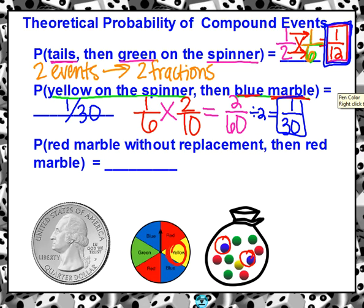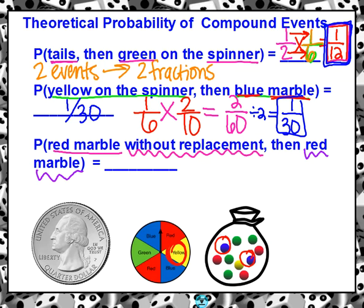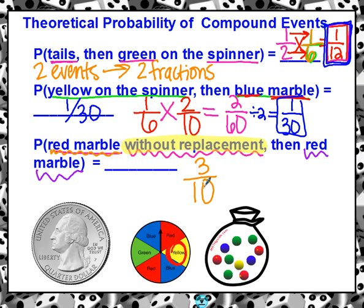The last one says the probability of a red marble without replacement, then a red marble. Think about how many events are happening. We said red marble without replacement, then a red marble — that would definitely be two events. The only difference is this phrase right here: without replacement. We're going to talk about what that means. But for right now, let's do the first event only. The probability of drawing a red marble — one, two, three out of ten. Three out of ten, we know that.